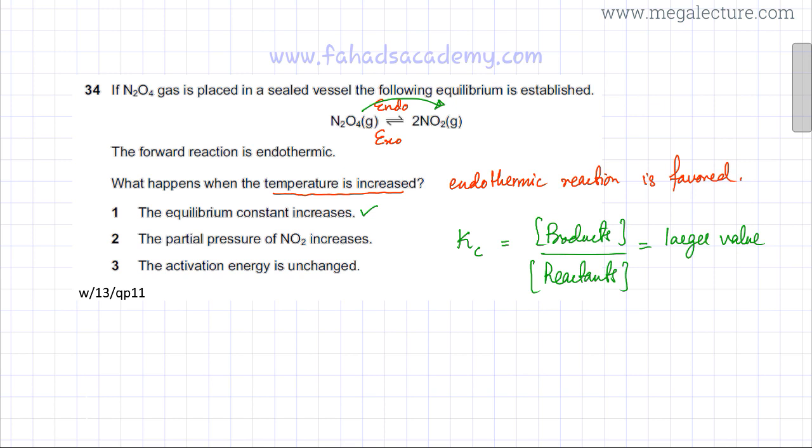The second option is that the partial pressure of NO2 increases. If more forward reaction is happening, the partial pressure of NO2 would be higher because you're going to have more molecules of NO2, and they will exert a larger pressure. So this second statement is also correct.